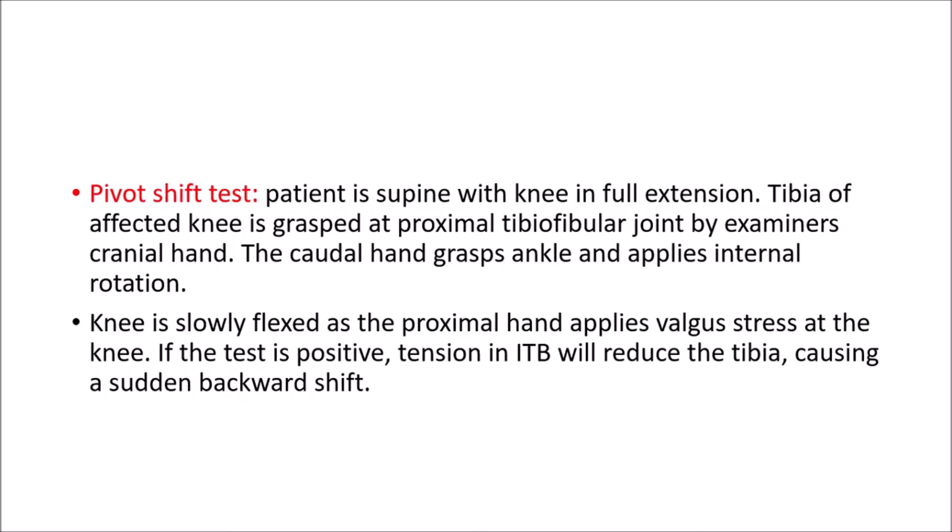Next is the pivot shift test. The patient is supine with the knee in full extension. The tibia of the affected knee is grabbed at the proximal tibiofibular joint by the examiner's cranial hand, and the caudal hand grabs the ankle and applies maximal internal rotation, subluxing the lateral tibial plateau. The knee is then slowly flexed as the proximal hand applies a valgus stress. If the test is positive, the tension in the iliotibial band will reduce the tibia causing a sudden backward shift.